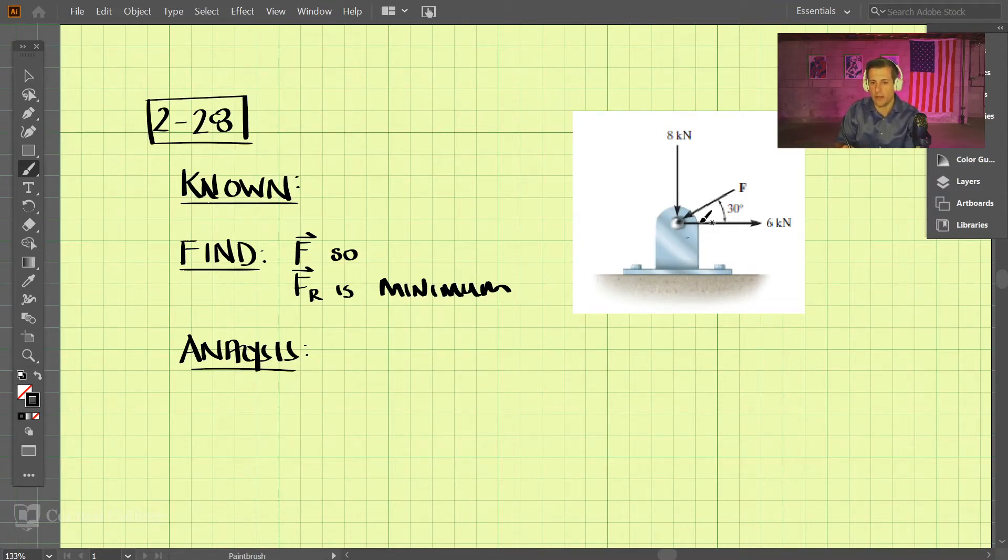Okay, so let's do problem 2-28. Here we have three forces on a bracket, and we don't know the magnitude of F, but we know it's at 30 degrees. We're trying to find out what is the magnitude of F.